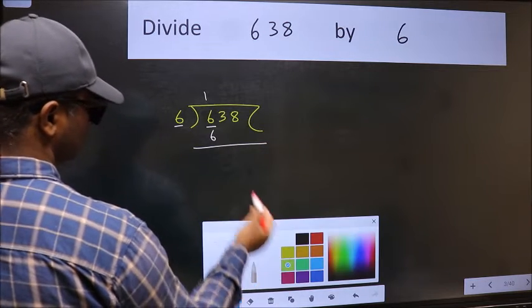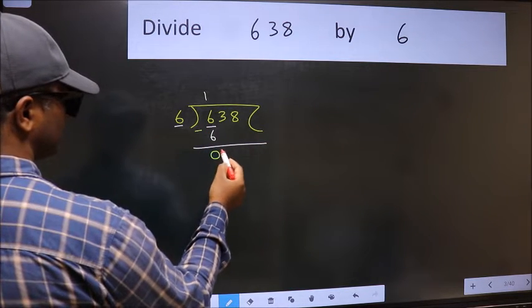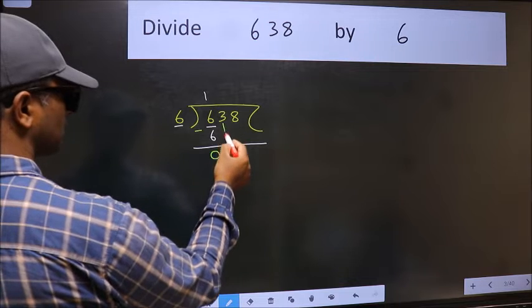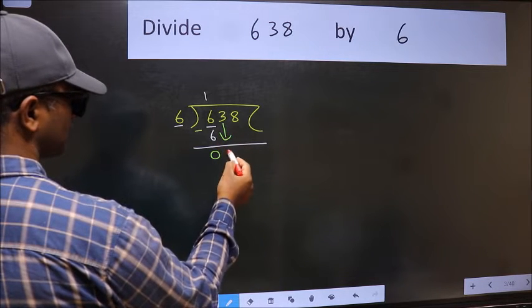Now we should subtract. We get 0. After this, bring down the beside number. So 3 down.